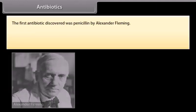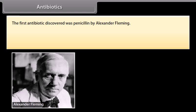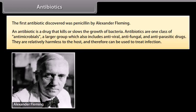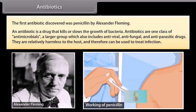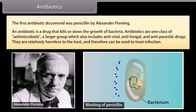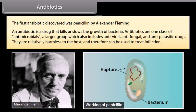Antibiotics. The first antibiotic discovered was penicillin by Alexander Fleming. An antibiotic is a drug that kills or slows down the growth of bacteria. Antibiotics are one class of antimicrobials, a larger group which also includes antiviral, antifungal and antiparasitic drugs. They are relatively harmless to the host and therefore can be used to treat infection. Penicillin works by preventing the production of peptidoglycan, the substance that forms the cell wall. This means the cell will continue to grow without dividing or developing a new cell wall; therefore the wall gets weaker and eventually ruptures.